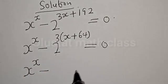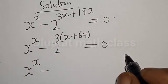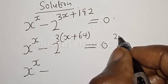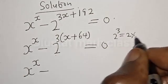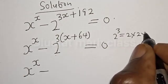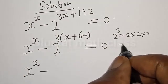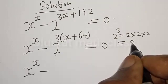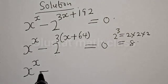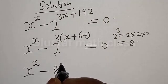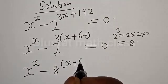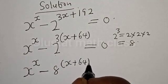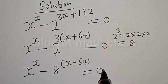Remember, this is 2 raised to power 3, which can be expressed as 2 raised to power 3s — and 2 times 2 times 2 is equal to 8. Then we have minus 8 into s plus 64 is equal to 0.